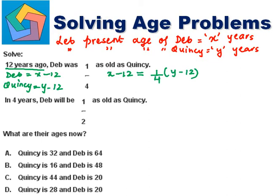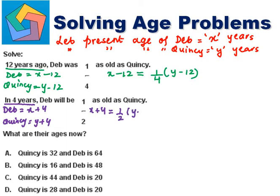And in four years, what will be their ages? Deb will be X plus four, and Quincy will be Y plus four. Deb's age will be equal to one-half of Quincy's age, that's Y plus four. So we can form two equations and solve them.